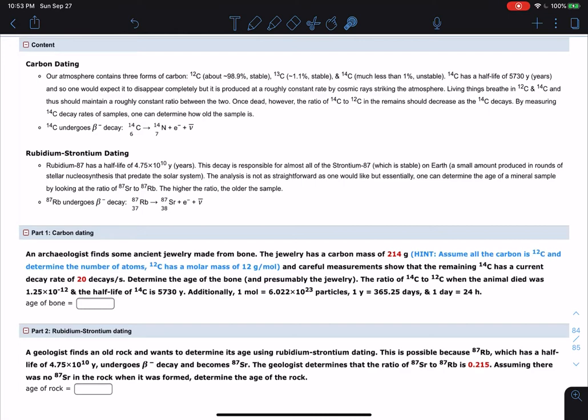And in this particular problem, we do have a bone that was found, some ancient jewelry made from bone. And we know the carbon mass, and we know the decay rate. In my case, it's 20 decays per second. And so we're trying to determine the age of the bone, and consequently, the jewelry.